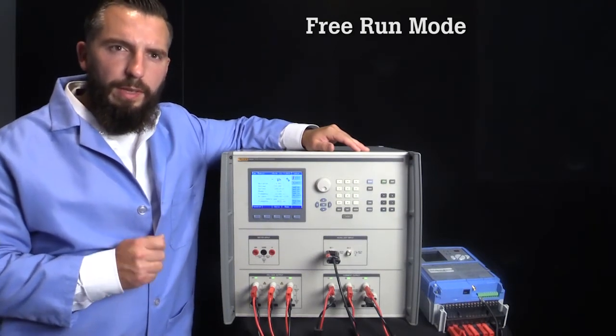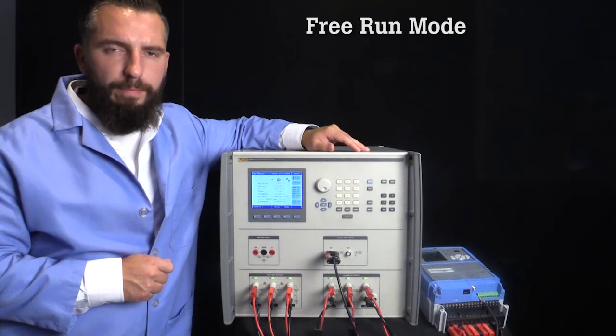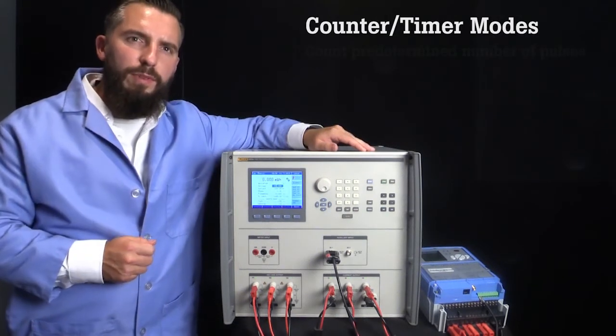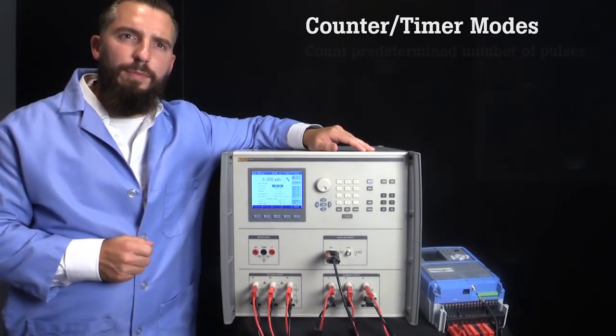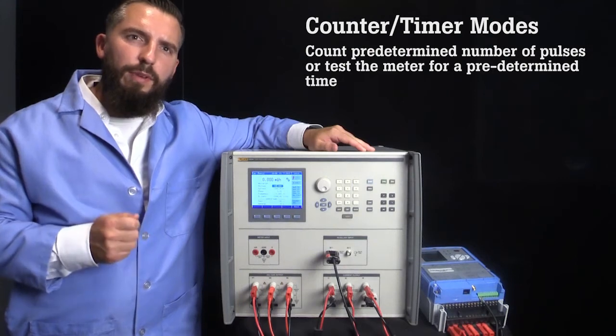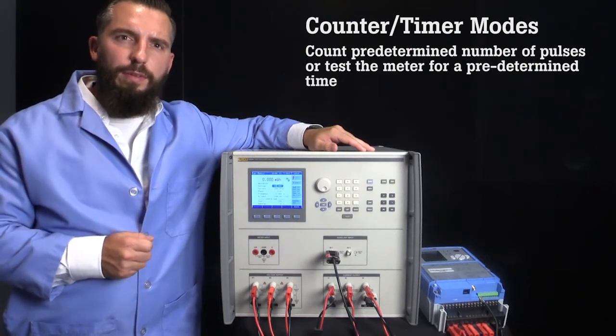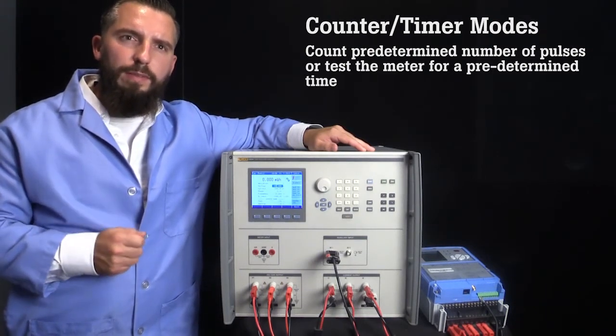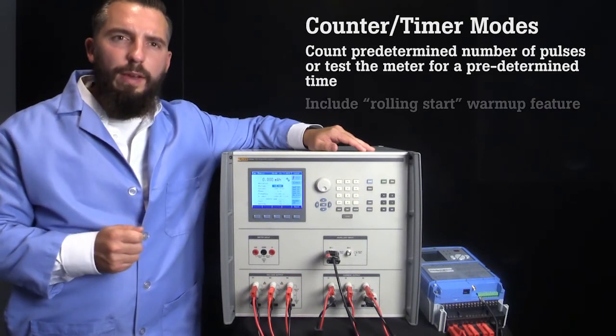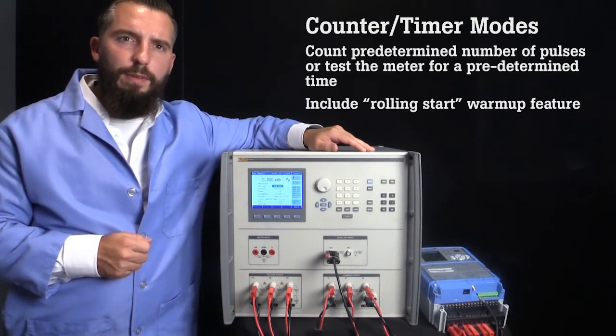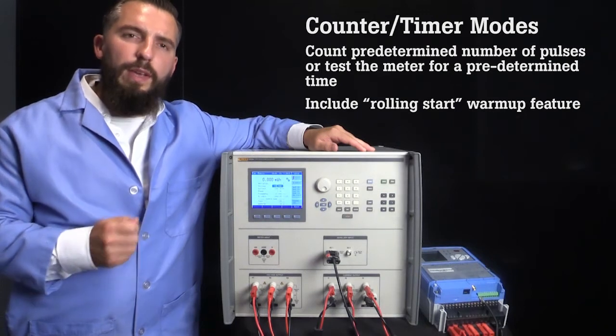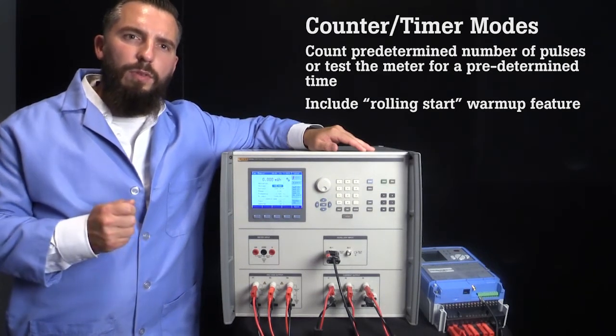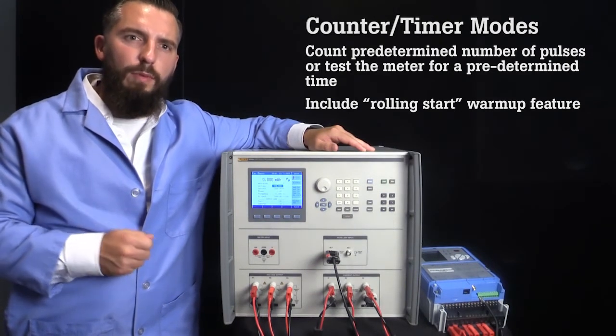For that, we recommend the counter mode or timer mode. The reason counter and timer modes are more repeatable methods to test energy meters is that they either count a predetermined number of pulses from the meter under test or they test the meter for a predetermined amount of time. Both the counter and timer modes have a warm-up feature for the UUT. This counter method is also known as rolling start method because of the warm-up feature.